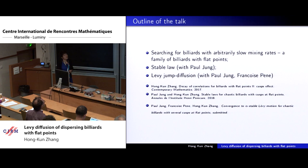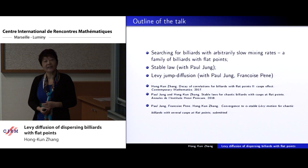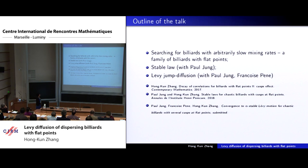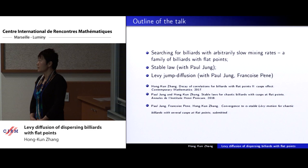It took more than 10 years to eventually find this ideal kind of billiards with decay rate correlation to be arbitrarily slow. Later, I had some joint work with Paul Zhang, who is a probabilist, and we proved the convergence to stable law. Also, in recent work with Paul Zhang and Françoise, we proved the convergence to Lévy diffusion process. Our goal is not only to prove the limiting theory, but also to characterize the diffusion coefficient. The last work was submitted about a month ago.